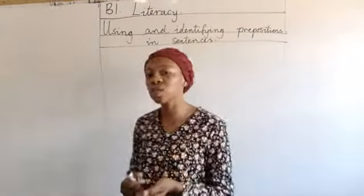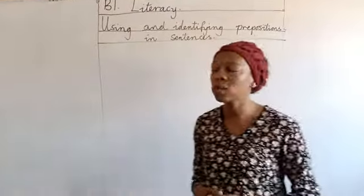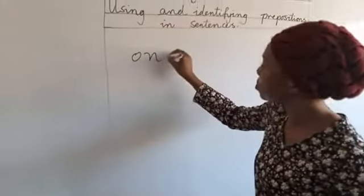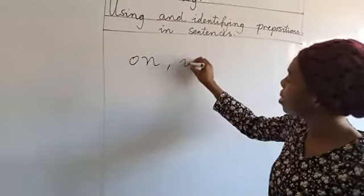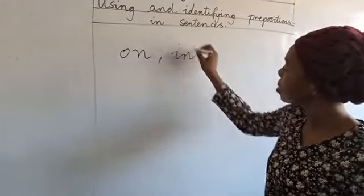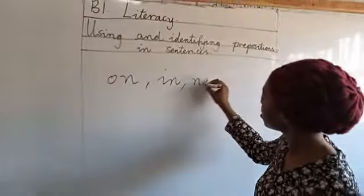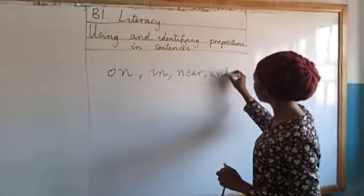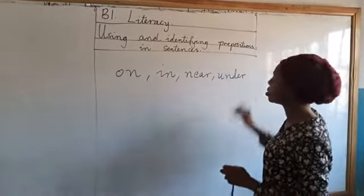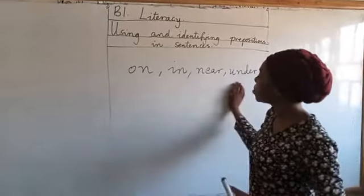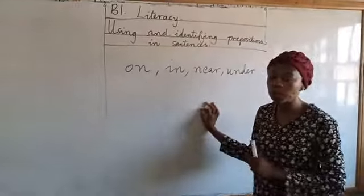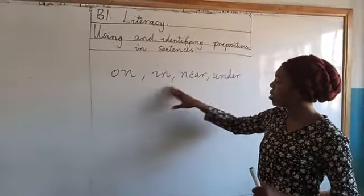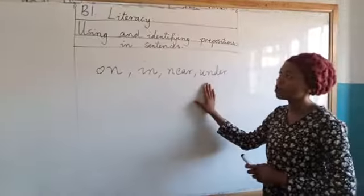And what were some of the prepositions we spoke about? We spoke about 'on'. We also spoke about 'in', 'near', and 'under'. So let's look at these four prepositions on the board. We have 'on', 'in', 'near', and 'under'.